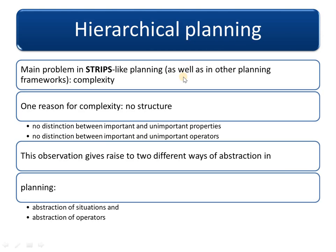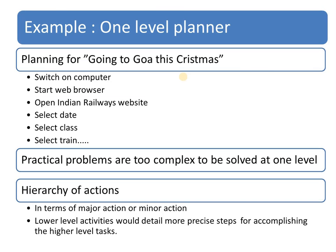That's all about hierarchical planning. In case of STRIPS-like planning, we used a stack and that was too complex because every action was in a stack and there was no possibility to find out which action is to be performed first or which action has higher priority. So in such cases we have implemented a level of abstraction to the STRIPS planning concept. The best example of hierarchical planning is given using a picnic example, which is easier to relate to than an AI problem. This example shows how a one-level planner leads to complexity.